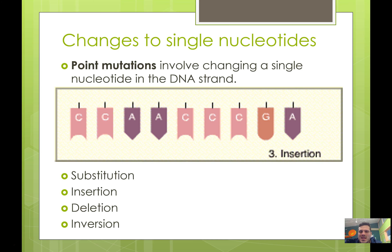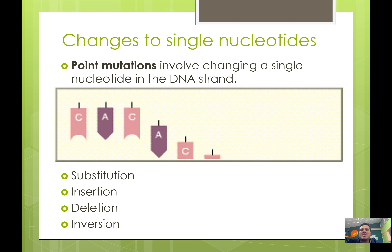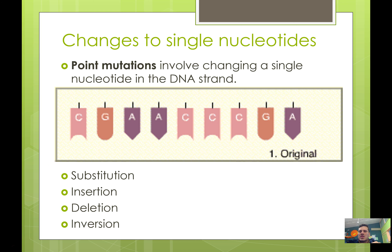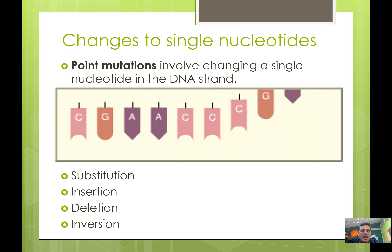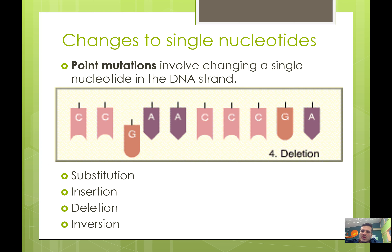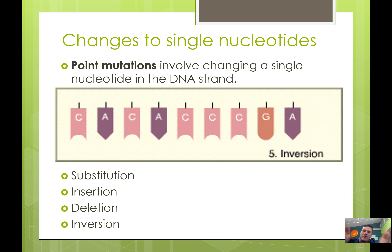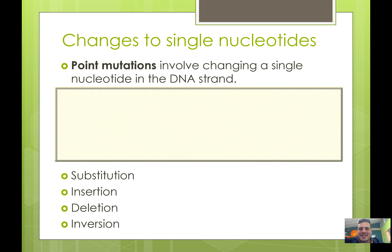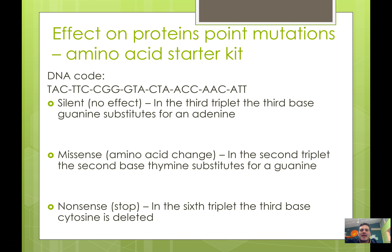The most important type of mutation in the evolutionary sense is what we call a point mutation. These are changes involving a single nucleotide — a single A, T, C, or G in the DNA strand. There are four different kinds: substitution, where you swap one nucleotide; insertion, where you add an extra one; deletion, where you remove one; and inversion, where you flip two around. Stop the video here and call me over because we're going to look at the effect of different point mutations on proteins using the amino acid starter kit.